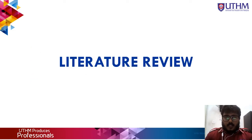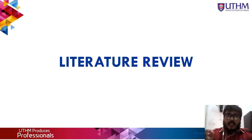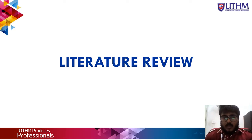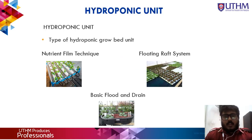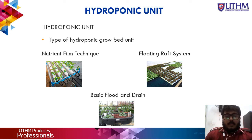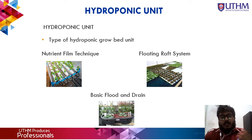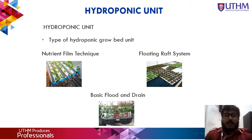Now for the literature review, covering previous researchers' studies on this aquaponics project. My first point in the hydroponic unit is the types of grow bed units in hydroponics. The first one is nutrient film technique. The second one is the floating raft system. And the third one is flood and drain. The nutrient film technique advantages are: a small quantity of nutrient water flows through the growth tubes exposing the plant's roots to it.